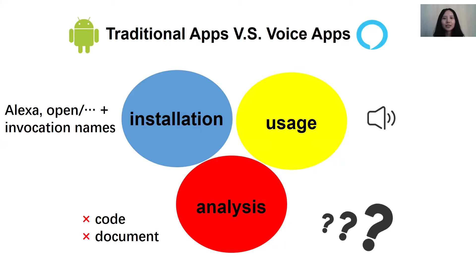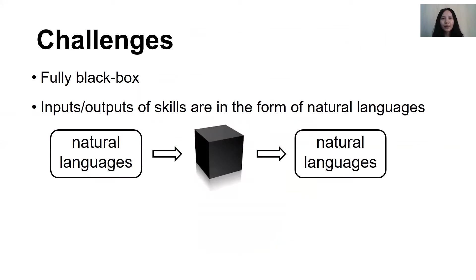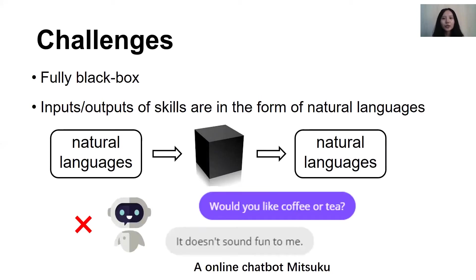So, to analyze a skill, there are two main challenges. First, a skill is fully black-box. What the analyzer can do is only send input to the skill and observe its output. The second challenge is that the input and output of skills are in the form of natural language. The analyzer should understand the output from skills.